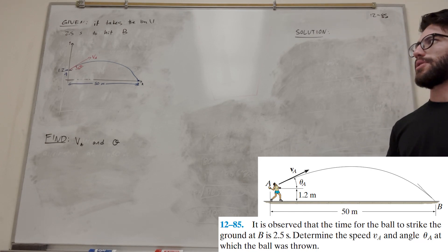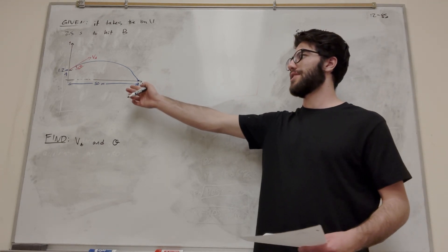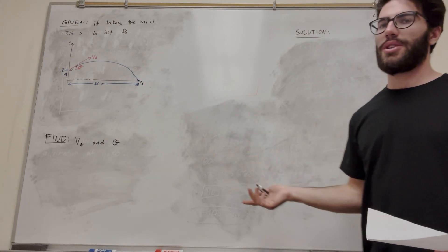What we're doing basically is we're throwing a ball, and we know it takes 2.5 seconds for it to hit the ground at b. We know the distance it travels, and we know the height that we throw it at. So let's go ahead and solve this problem.